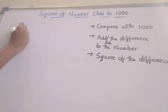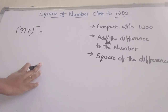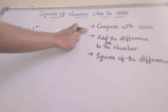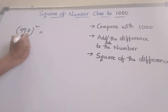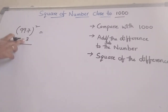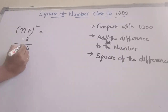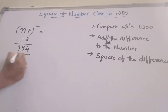What is the square of 997? First, compare with 1000. That is minus 3. We can subtract this 3 from this number. What number should come? That is 994.